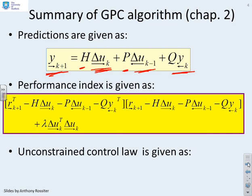The typical performance index, when you substitute those predictions in, has a term with the future set point targets - this r future term minus the future output predictions - and essentially the square of this term, plus a term with the square of the future control increments.